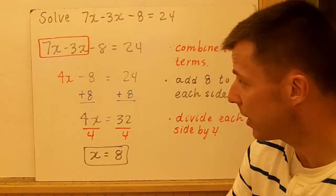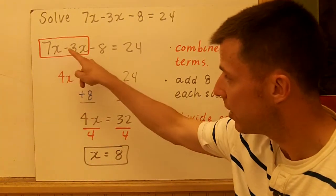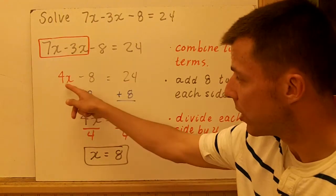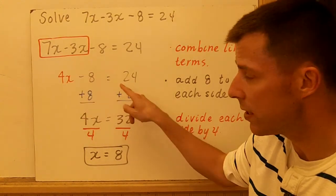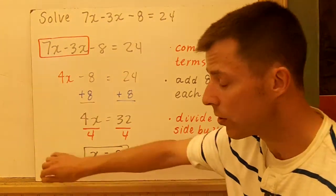To check if my answer is correct, I could go back up and plug 8 in for each x, or I could start here on this two-step equation. 4 times 8 is 32. 32 minus 8 is 24, so my answer would be correct.